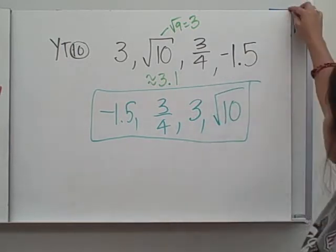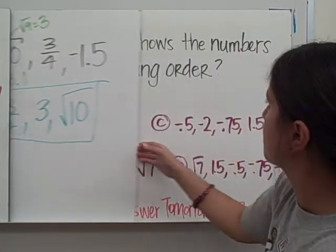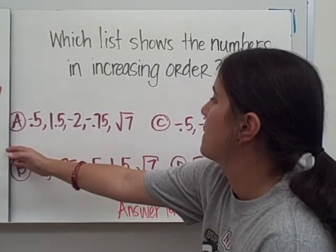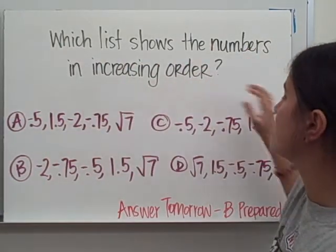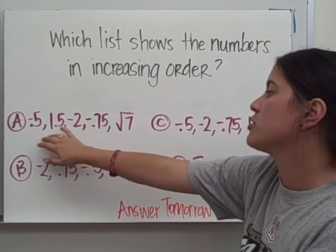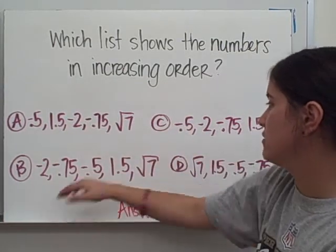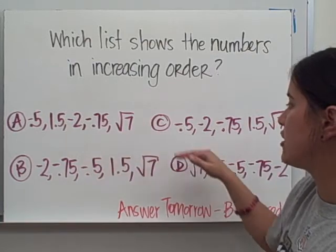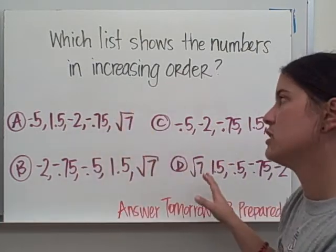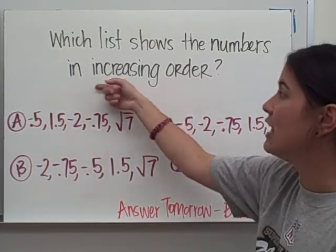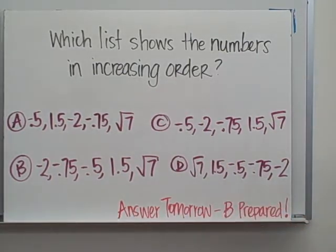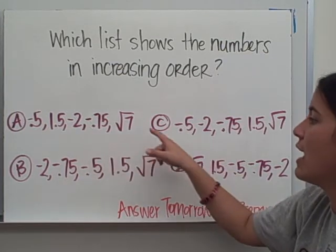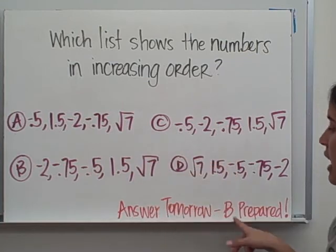I have one more for you. This last one asks: which list shows the numbers in increasing order? I've given you four options: A, B, C, or D. Look at all the options and find the one that's in increasing order. Be prepared because tomorrow we're going to go over the answer.